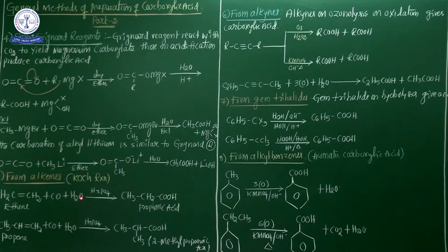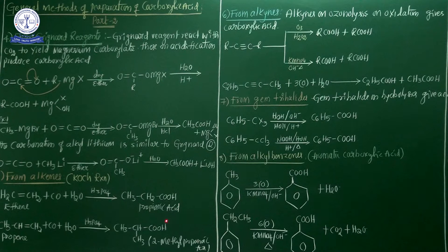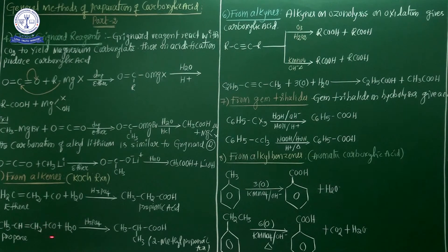One example: CH₂=CH₂ (ethylene) treated with carbon monoxide and water in the presence of phosphoric acid — finally propanoic acid (CH₃CH₂COOH) is obtained. Another example: propene (CH₃CH=CH₂) plus carbon monoxide and water in the presence of phosphoric acid at 623 K pressure — two-methylpropanoic acid is formed.